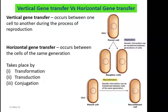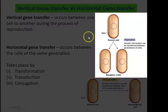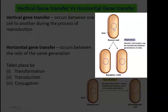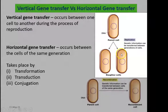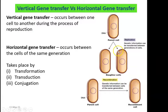This has been clearly explained in the right-hand side image. A parent cell is there, and its genetic information has been transferred to two daughter cells after replication of the DNA and separation of one cell into two cells due to the binary fission process. This is referred to as vertical gene transfer.